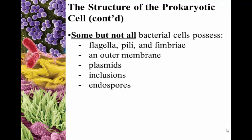Some but not all bacteria possess — and this can be in any order, some bacteria can have several of these or one of these, it just depends upon the organism — flagella, pili, and fimbriae. Most of you are probably familiar with flagella, but pili and fimbriae are probably a little out of your realm as of right now. An outer membrane depends upon the type of bacteria you're dealing with. Also plasmids, inclusions, and endospores.